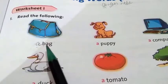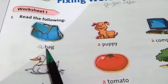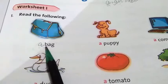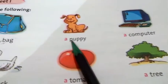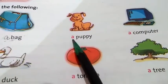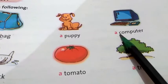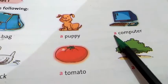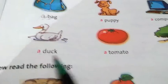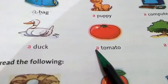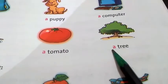Only A, E, I, O, U are vowels. B is different from A, E, I, O, U — it is not a vowel, so it is a consonant. We will use A before 'bag'. Puppy starts with P — P is consonant, so we write A before puppy. Computer starts with C — C is consonant, so we write A. Duck — D is consonant, so we write A. Tomato — T is consonant, we write A. Tree — T is again consonant, we write A before it.